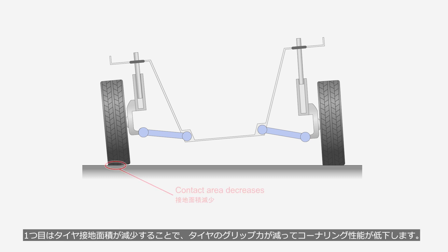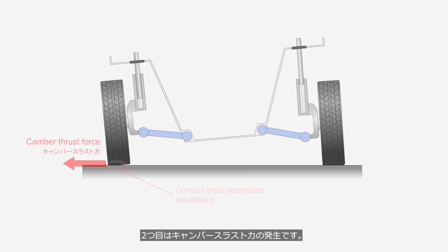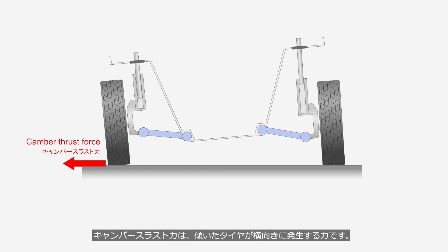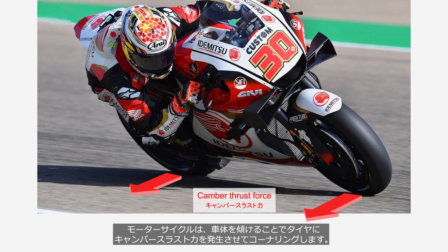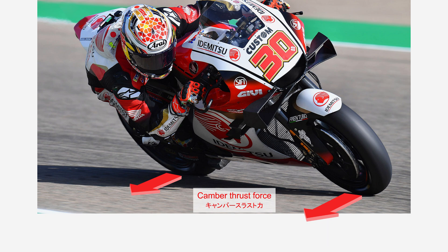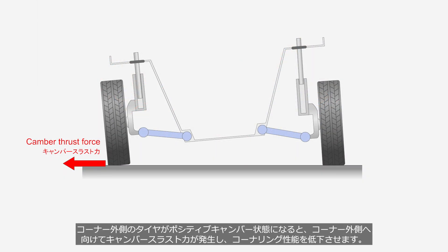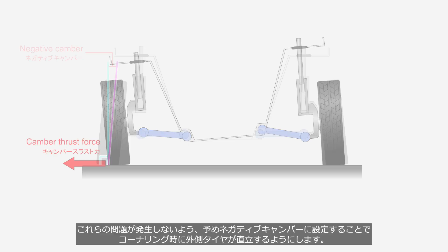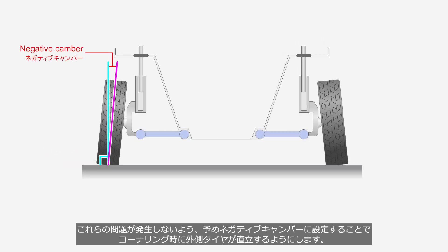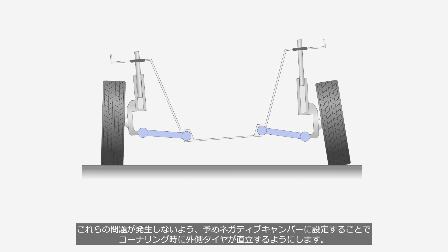The first issue is that the tire's contact area decreases, reducing traction and lowering cornering performance. The second issue is the generation of camber thrust force — the lateral force generated by a tilted tire. Motorcycles corner by leaning the chassis, which generates camber thrust force on the tires. In the case of cars, when the outer tire moves into a positive camber position, camber thrust force is generated outward, reducing cornering performance. To prevent these issues, the wheels are set with a negative camber in advance, so that the outer tire stands upright during cornering.